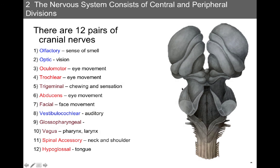We also have 12 pairs of cranial nerves. The olfactory nerve is cranial nerve one — it senses smell. Cranial nerve two, the optic nerve, is important for vision. Cranial nerve three is the oculomotor nerve for eye movement. Cranial nerve four is the trochlear nerve, which is also important for eye movement. Cranial nerve five is the trigeminal, which has both sensory and motor functions, involved in chewing and sensation. Cranial nerve six, the abducens, is involved in eye movement.